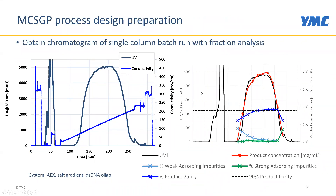This is the first batch chromatogram we ran — an ion exchange step using a salt gradient for a double-stranded DNA oligo. Fraction analysis revealed that most fractions on the back side of the peak were in specification, with near 90% product purity as the specification. The blue crosses show the purity rising slowly, but a large portion of product is not pure enough — not in specification — due to weakly adsorbing impurities represented by the light blue crosses.